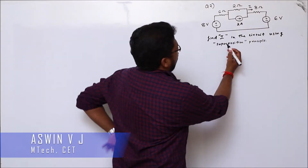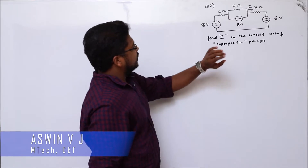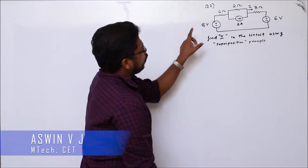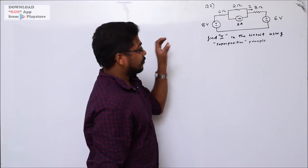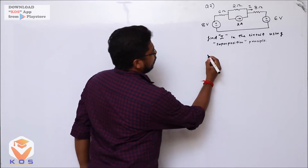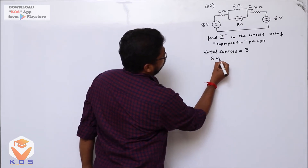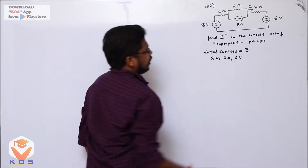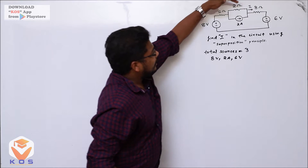The second question is to find the current I in the circuit using the superposition principle. We have 3 sources, so we need 3 steps: an 8V source, a 6V source, and a 2A source. Each of the 3 sources contributes to the total current I.